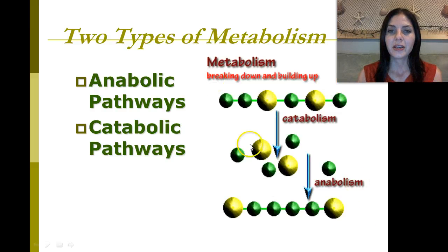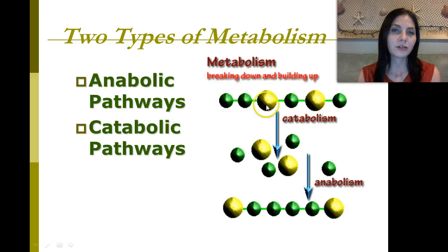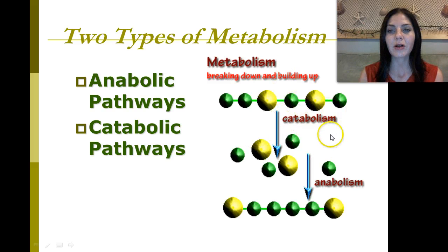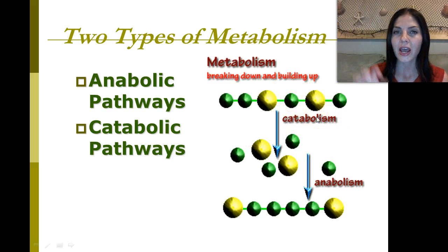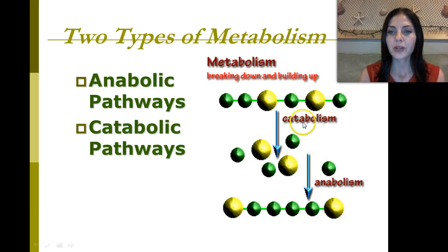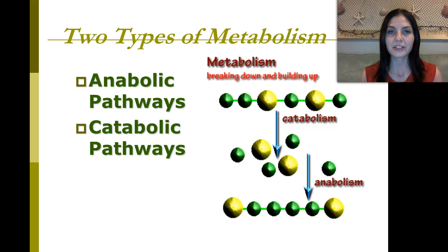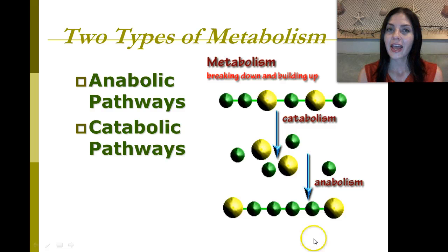Looking at the two types of metabolism: if we have a polymer — many things linked together — and we want to break it down through the process of hydrolysis by adding water, that's a catabolic reaction; we're scratching through and breaking all of those bonds. That's catabolism — just a fancy word for an enzymatic hydrolysis reaction. If we take all those molecules and add them back together through dehydration synthesis by removing water, that's anabolism. Ana adds, and cats scratch.